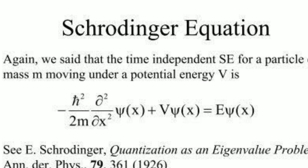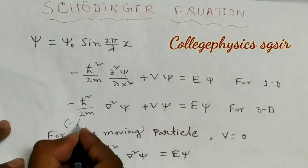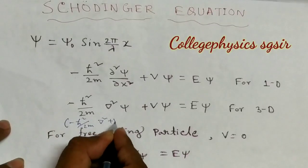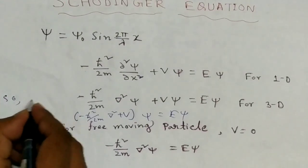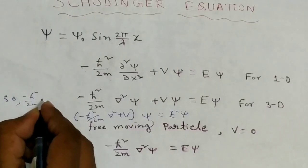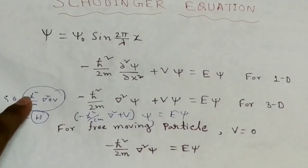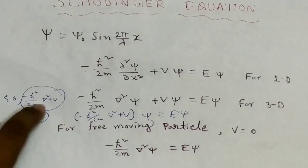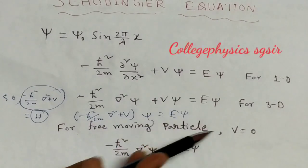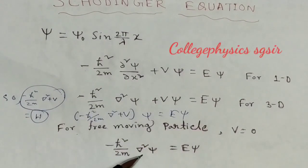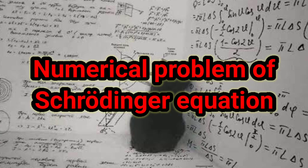For three dimensions: minus h-bar squared / 2m times grad squared Psi plus V·Psi equals E·Psi. We can factor this as: (minus h-bar squared / 2m · grad squared plus V) Psi equals E·Psi. The operator H = minus h-bar squared / 2m · grad squared plus V is called the Hamiltonian operator. For a free-moving particle where potential V equals zero, the Schrödinger equation becomes: minus h-bar squared / 2m · grad squared Psi equals E·Psi.